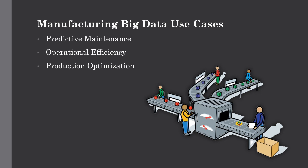The last manufacturing use case is production optimization. Optimizing the production line can decrease costs and increase the revenue of the company. Big data can help here to understand the flow of items through production lines to see which areas can benefit the most. This data analysis can reveal which steps lead to increased production time and which areas can cause delays.